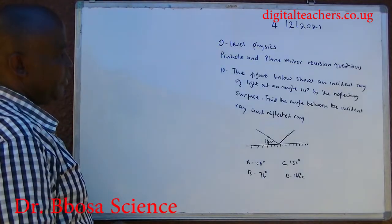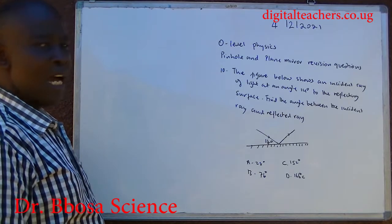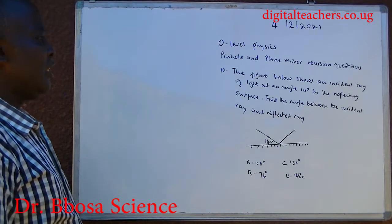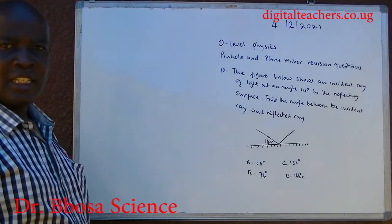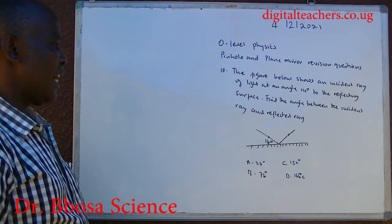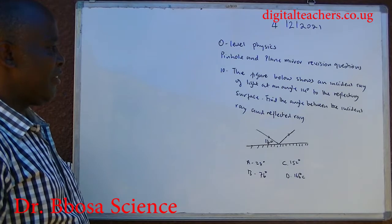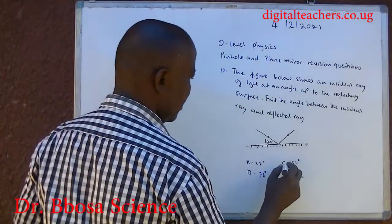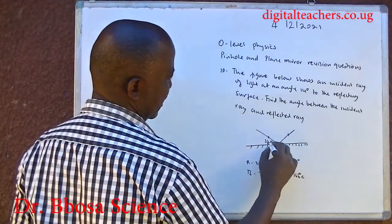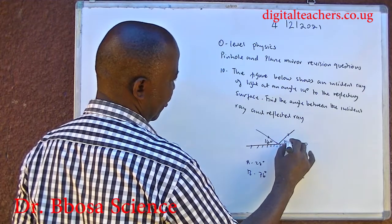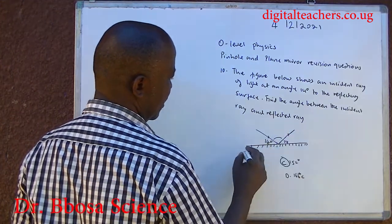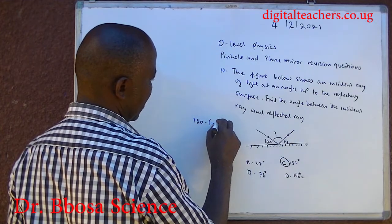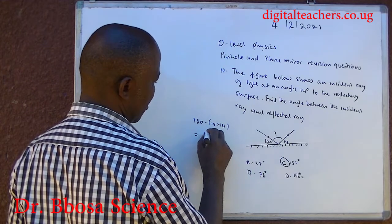Number ten: the figure below shows an incident ray of light at an angle of 14° to the reflecting surface. Find the angle between the incident ray and the reflected ray. You can pause and answer. The answer is C. This angle is also 14°, so the angle between them is equal to 180 minus (14 plus 14), which equals 152°.